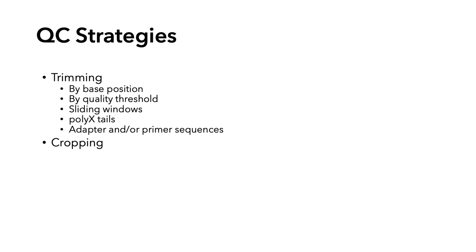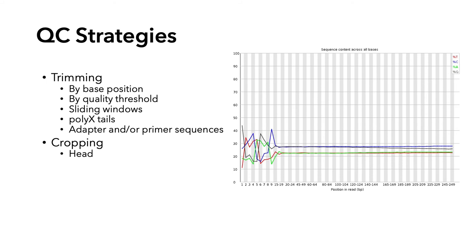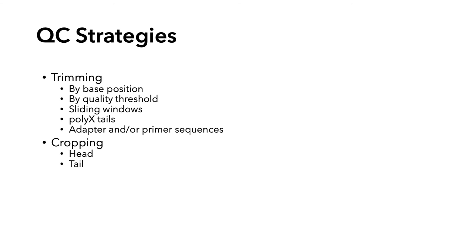Another general QC strategy is cropping, where you remove a chunk of bases at the beginning or end of the read. You may want to remove the first 10 base pairs based on the per base sequence content plot, which shows bias due to primer annealing. You can also remove bases from the end, although head cropping is generally used more than tail cropping.